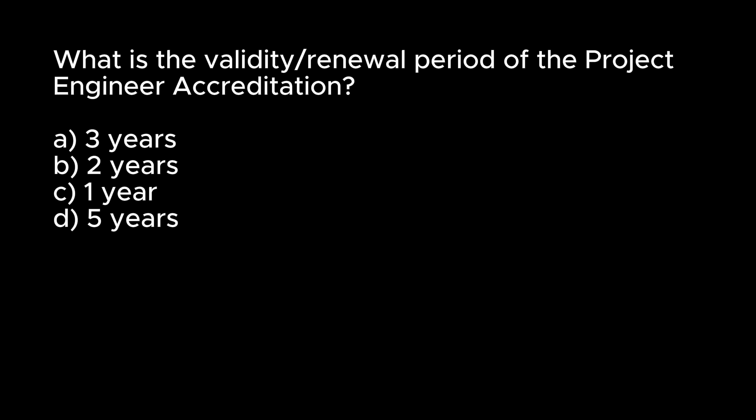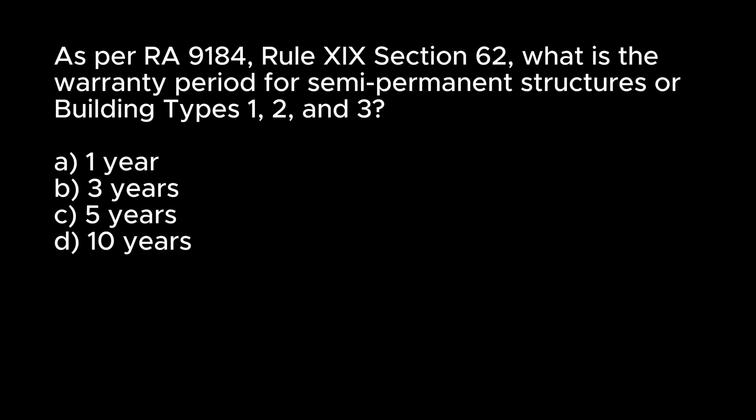What is the validity/renewal period of the project engineer accreditation? A. 3 years. B. 2 years. C. 1 year. D. 5 years. Answer: A. 3 years. As per RA 9184, Rule 19, Section 62, what is the warranty period for semi-permanent structures or building types 1, 2, and 3? A. 1 year. B. 3 years. C. 5 years. D. 10 years. Answer: C. 5 years. That concludes our review of the project engineer questions and answers.